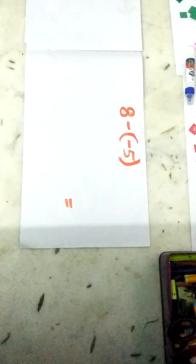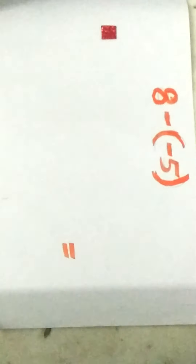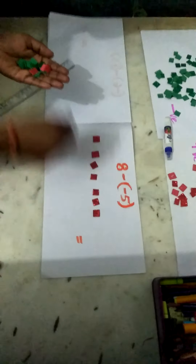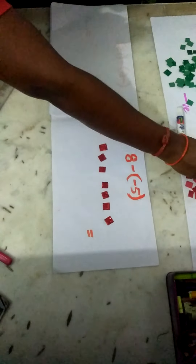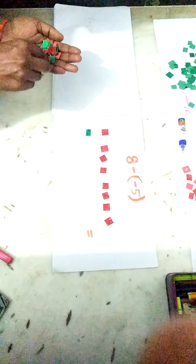Now next question: 8 minus negative 5. That is, from positive 8 we are going to take away negative 5. So let's take positive 8 red counters: 1, 2, 3, 4, 5, 6, 7, 8. We have taken 8 positives. From this positive 8, you have to take away negative 5. You cannot take away negative 5 from this positive 8. So we are going to bring 5 pairs of zeros.